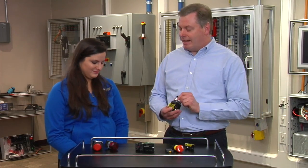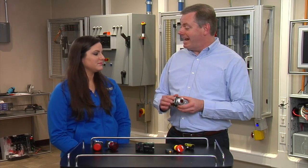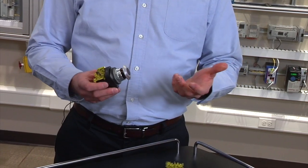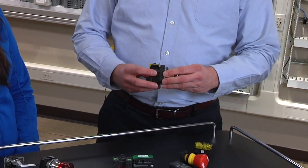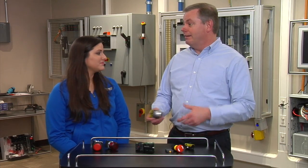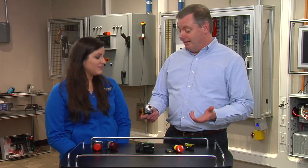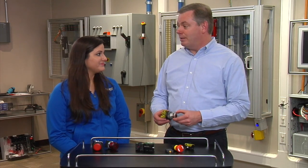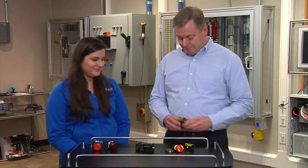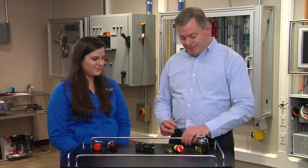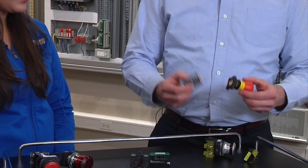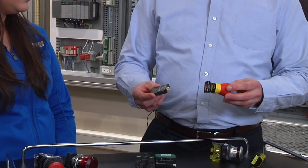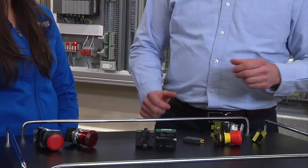So these contact blocks monitor the fact that they're attached to the button. So if the contact blocks were to come separated from the switch, the safety circuit will trip and shut the machine down, and you'll know that the e-stop button isn't functioning. That's really neat. And we have these both in our NEMA products, the 800T and 800H line of products, and we also have them in our IEC line, the 800F.